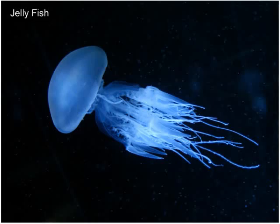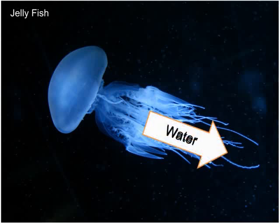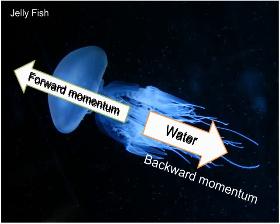Jellyfish. The jellyfish moves in water by applying the principle of conservation of momentum too. When the jellyfish wants to move, it will push the water backward using its body. This action produces a backward momentum. According to the principle of conservation of momentum, an equal and opposite momentum is produced and acts on the jellyfish, pushing its body to move forwards.